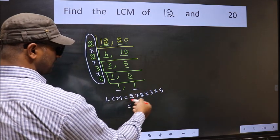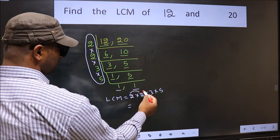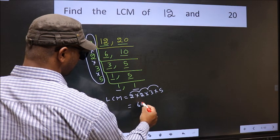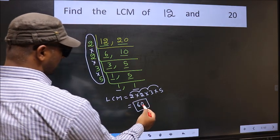So let us multiply these numbers. 2 into 2, 4 into 3, 12 into 5, 60. So 60 is our LCM.